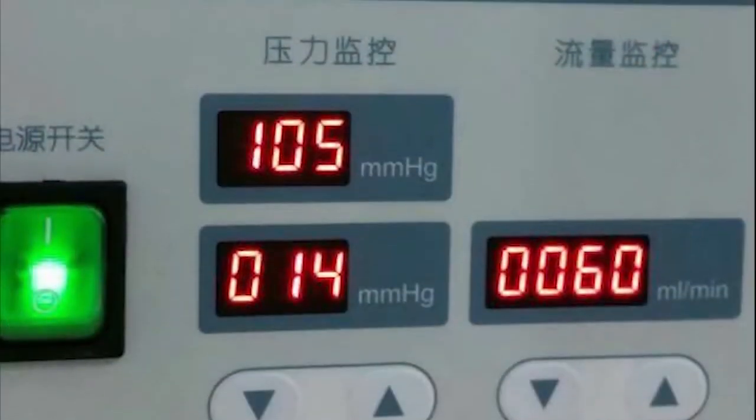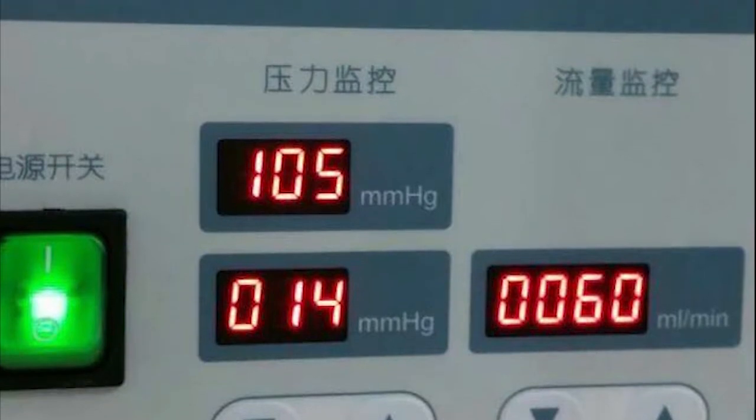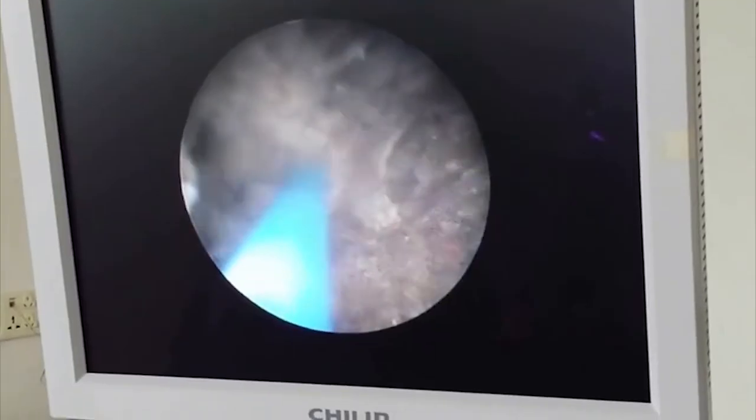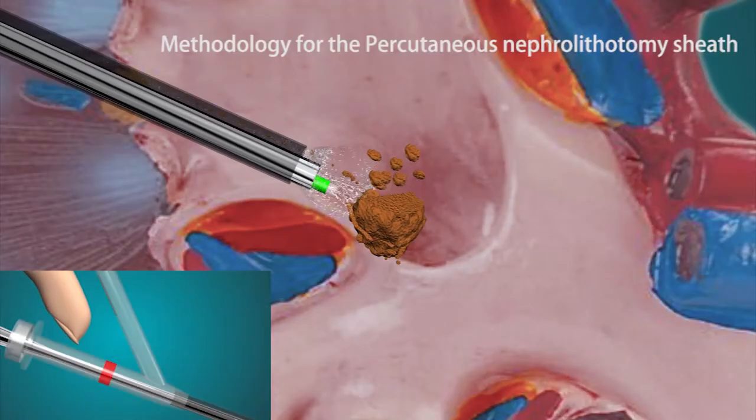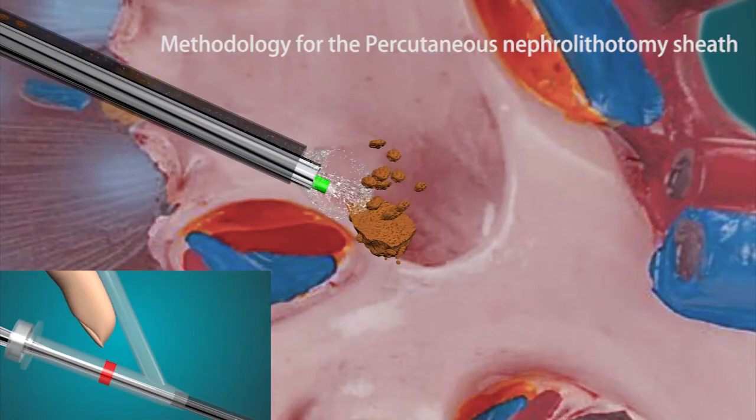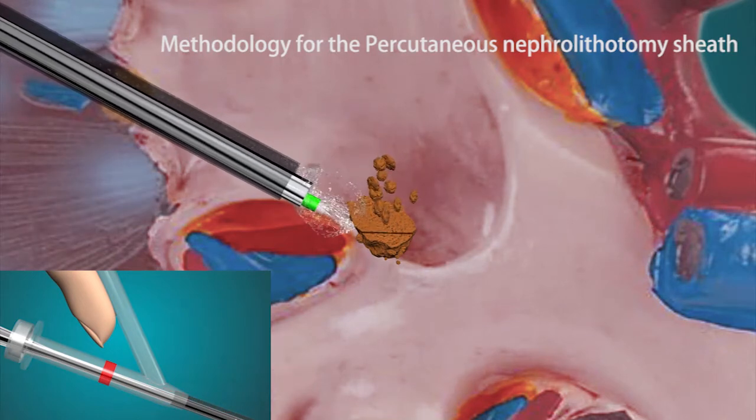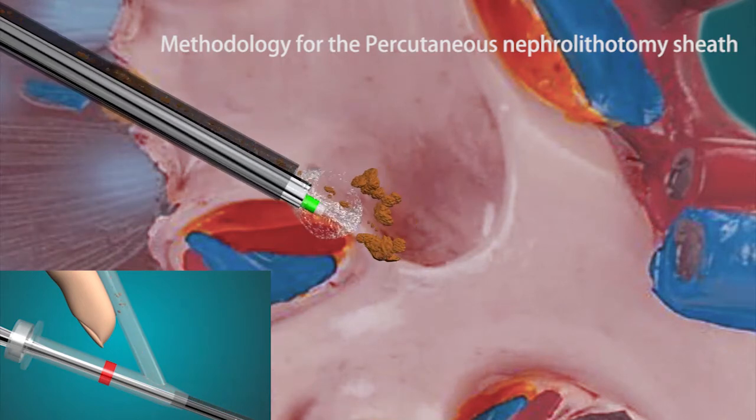Commence lithotripsy using holmium laser. The negative aspiration pressure can be adjusted using the pressure vent. The small stone fragments will exit in the space between the scope and the sheath.